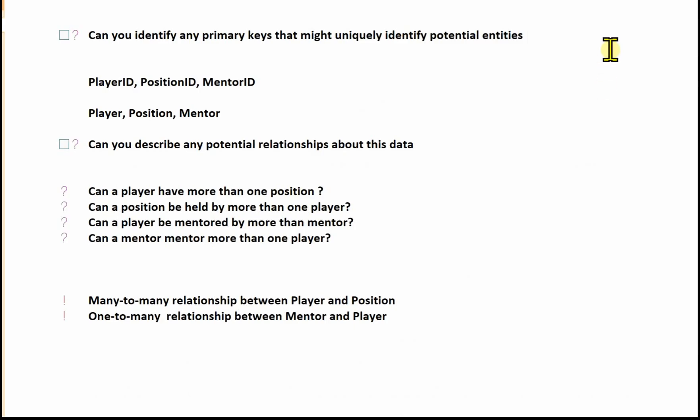To summarize what we've identified from the scenario and sample data: we have three primary keys that uniquely identify entities — player ID, position ID, and mentor ID — giving us the entities player, position, and mentor. In terms of relationships: a player can have more than one position (yes), a position can be held by more than one player (yes), a player can be mentored by more than one mentor (no), and a mentor can mentor more than one player (yes). So we have a many-to-many relationship between player and position, and a one-to-many relationship between mentor and player.